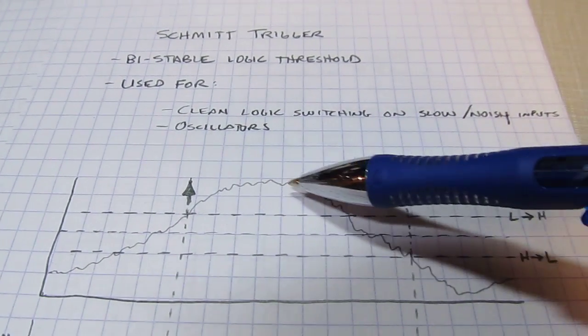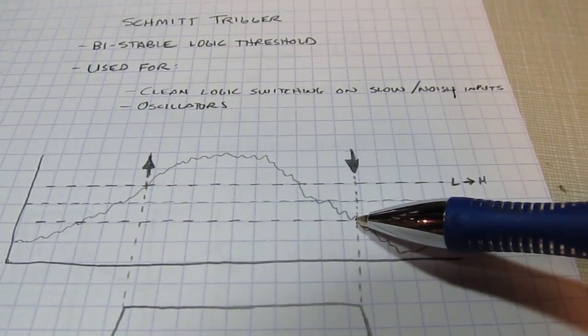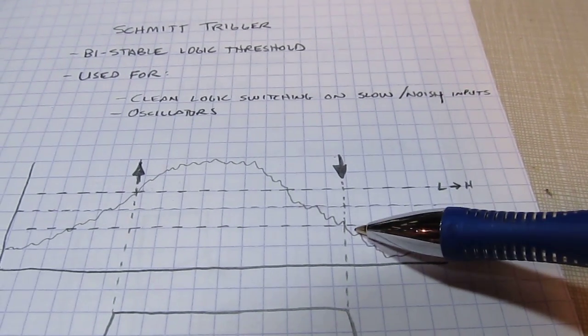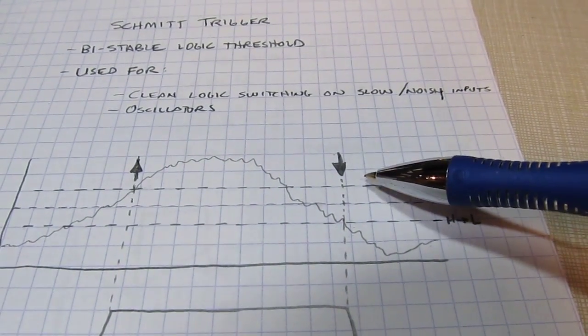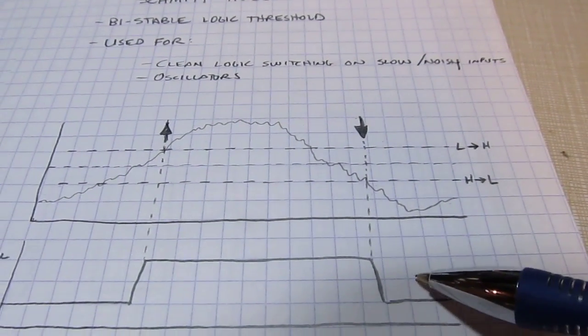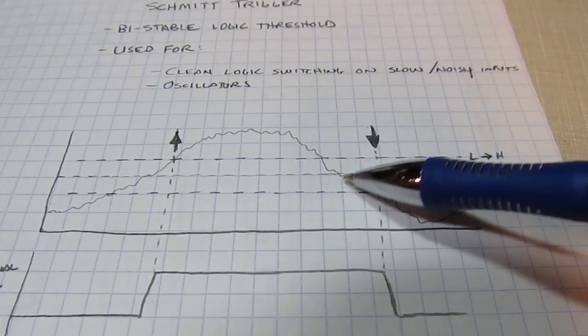And then in order for the state to change, that voltage would have to come back down through that lower threshold. And the same thing applies. Once we cross through that threshold once, the logic state changes, the threshold moves, and we get a nice clean transition. So this is kind of what our logic state would look like when we cross through this, rather than chattering potentially here and here.